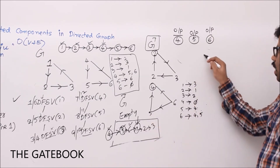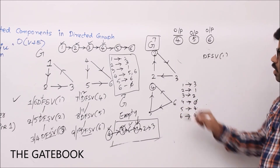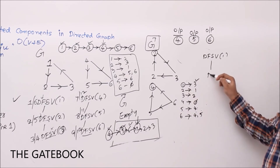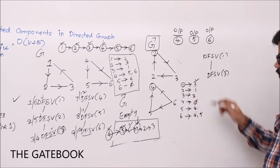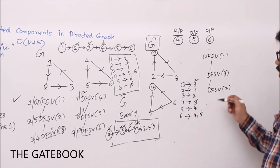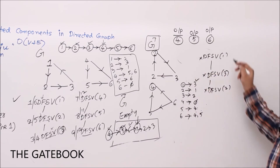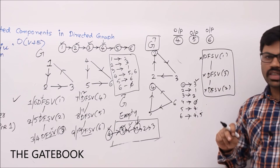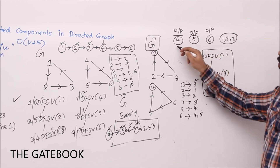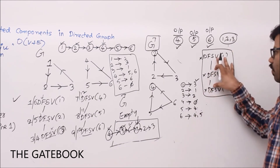Finally, DFS is called from vertex 1. From vertex 1, DFS visits vertex 3 (1's neighbor in G transpose), then vertex 3 calls DFS on vertex 2. Now 1, 2, 3 are all visited; no new neighbors remain, so all calls close. This entire group is one unit of DFS calls, so we treat {1, 2, 3} as one connected component. So the four components are: {4}, {5}, {6}, and {1, 2, 3}.